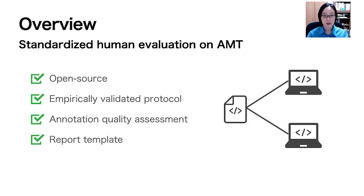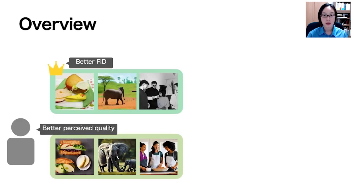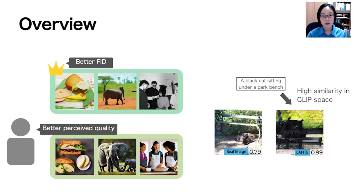To address this, we developed a standardized human evaluation protocol for text-to-image models. Our findings reveal a considerable discrepancy between FID and human evaluations, and the recently introduced CLIP score is already outdated. We offer some human evaluation resources and hope they benefit future research.